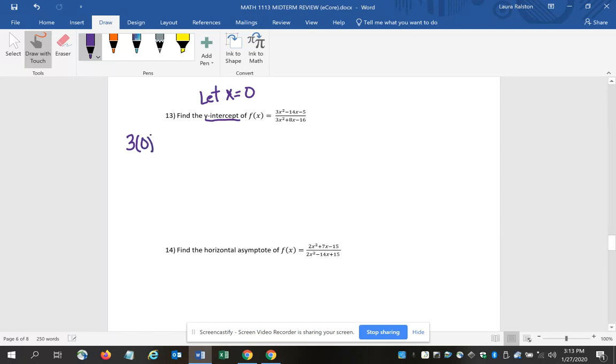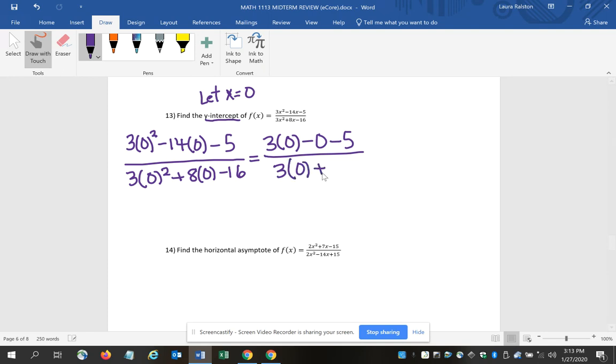If I do that for this problem, I have 3 times 0 squared minus 14 times 0 minus 5, all over 3 times 0 squared plus 8 times 0 minus 16. You can do the math – you'd have 3 times 0 minus 0 minus 5 over 3 times 0 plus 0 minus 16. So you have 0 minus 0 minus 5, 0 plus 0 minus 16.